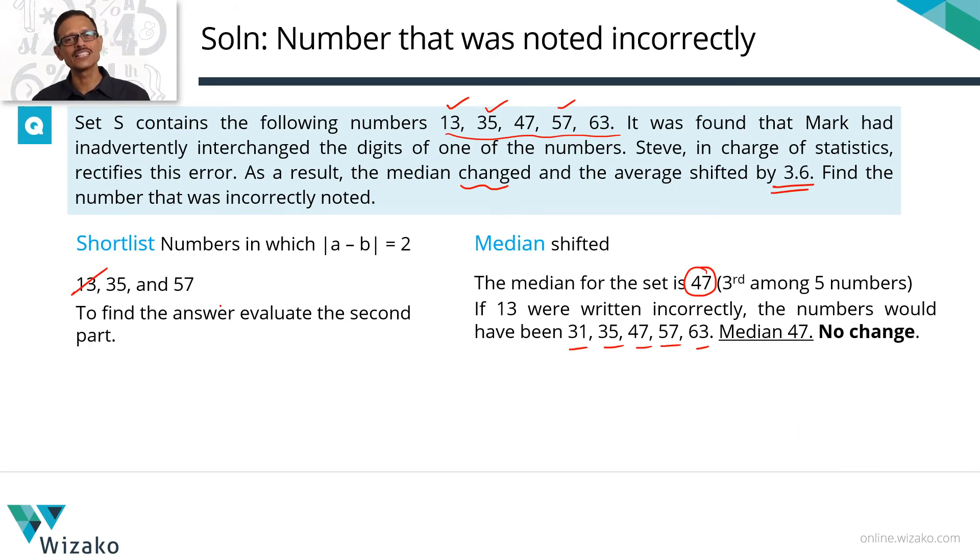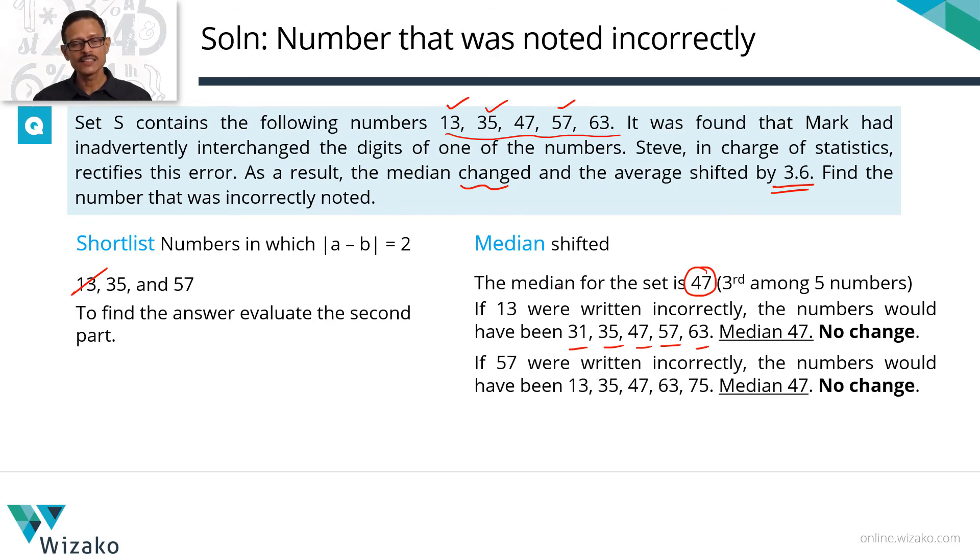We'll go to 57. If he wrote this 57 incorrectly, then the numbers would have been 13, 35, 47. 57 was noted down as 75. So it goes after 63. Which is the third number from the left? 47. The median is 47. The original median was also 47. No change in median. So 57 is not the answer.